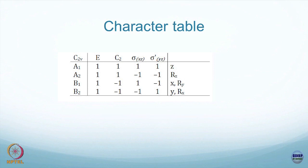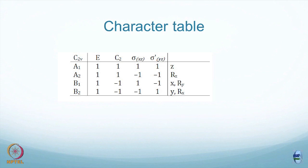A1 and A2 correspond to two different one-dimensional irreps. The first one is the trivial unit representation. C2 is the principal axis here; for A representations that element is plus 1, that is why we call them A.